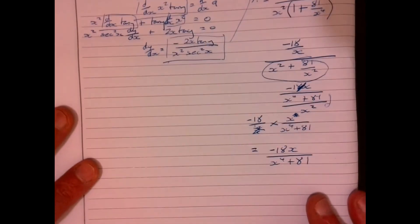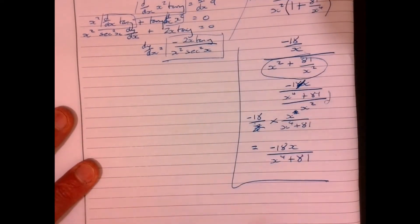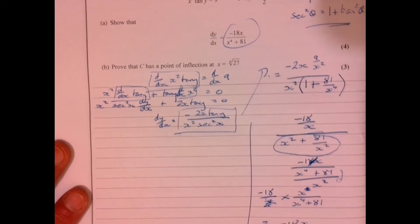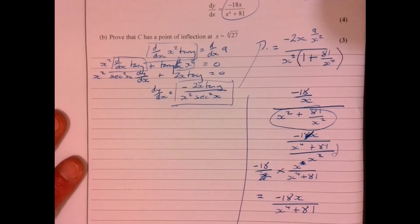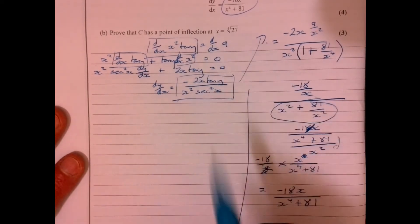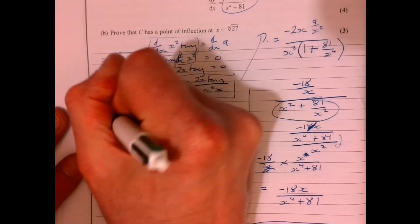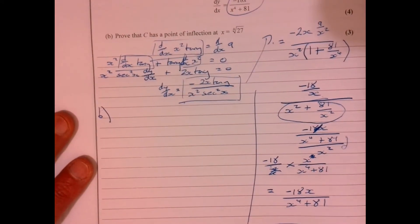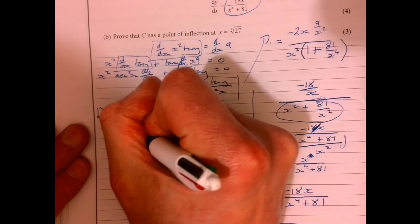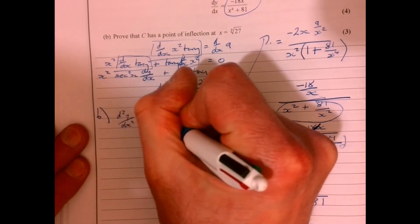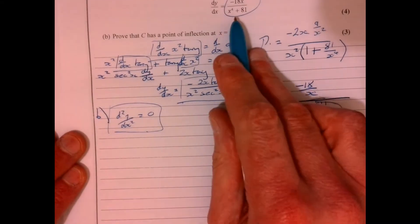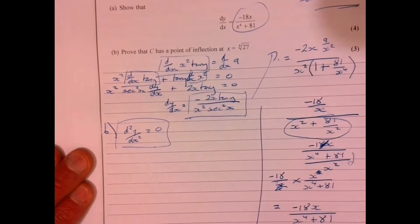Now let's have a look at part b. Again, I'm just going to try and, I'd normally spread my work out a little bit more. Let's have a look at part b now. It says, prove that C has a point of inflection at x equals the 4th root of 27. Point of inflection. So point of inflection is when this part equals 0, isn't it? So we're going to have to differentiate this again.